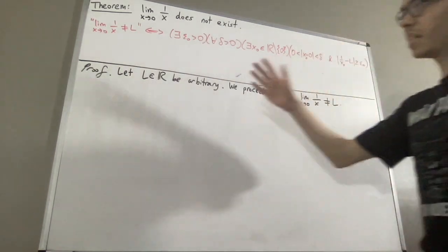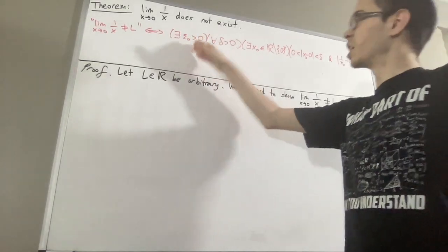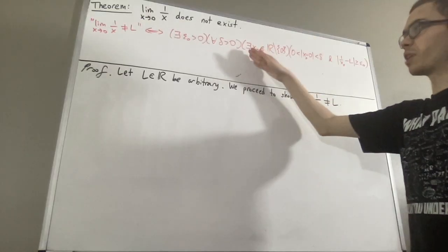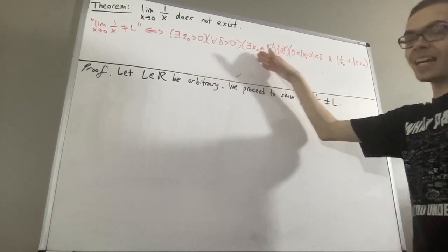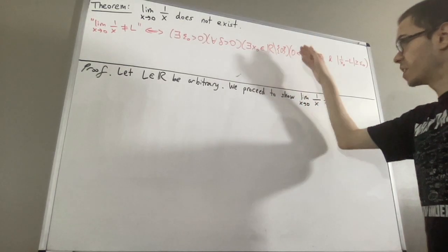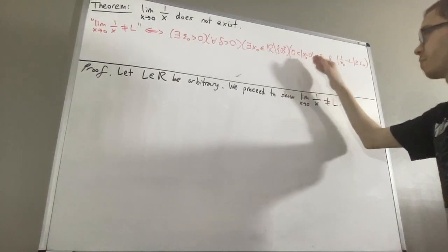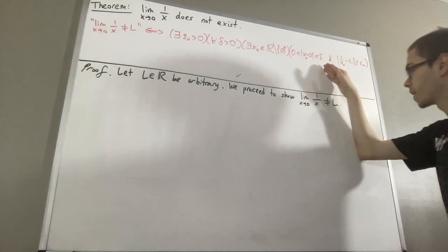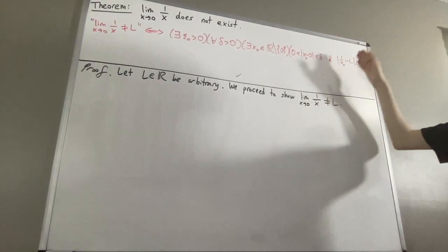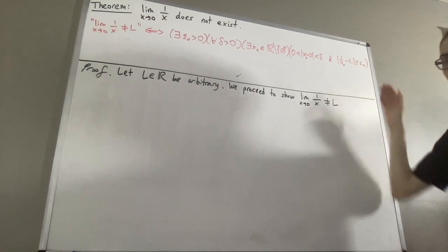Using the negation of the definition of a limit, to say the limit as x approaches 0 of 1 over x is not equal to L means the following: there exists an epsilon naught greater than 0, such that for every delta greater than 0, there exists an x naught in the non-zero real numbers, such that 0 is less than the absolute value of x naught minus 0, which is less than delta, and the absolute value of 1 over x naught minus L is greater than or equal to epsilon naught.